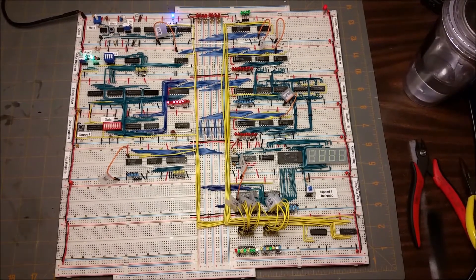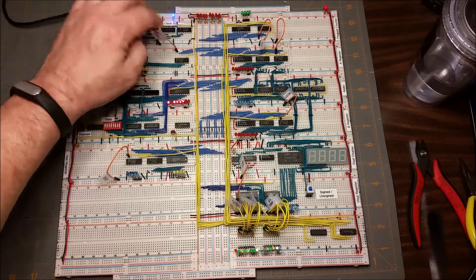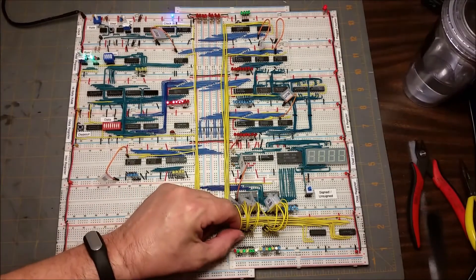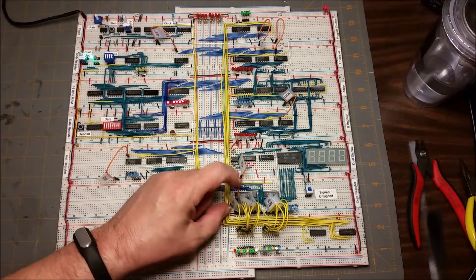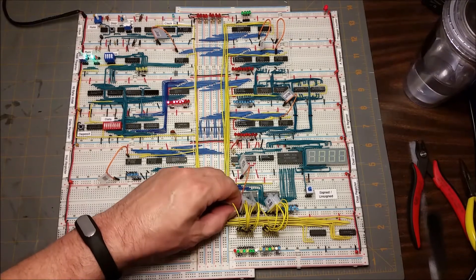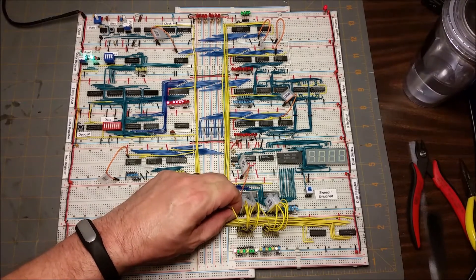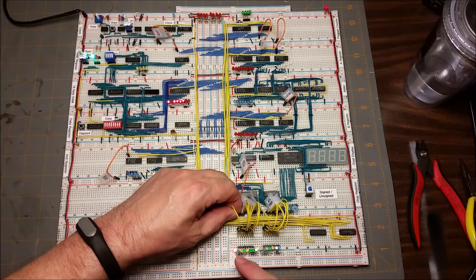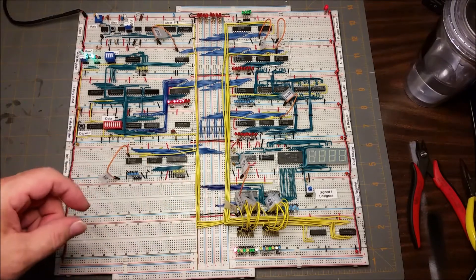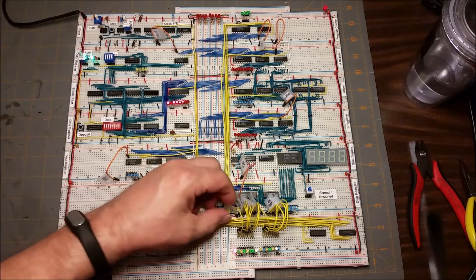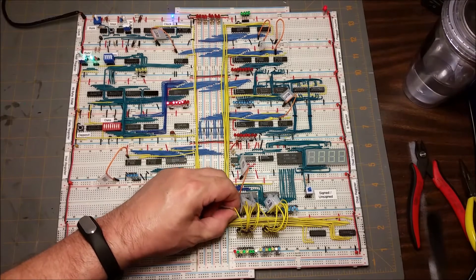I'll start with halt. You'll notice the clock is active. When I play the halt signal, you'll see the red LED comes on and the clock stops. When I remove the halt, the clock resumes.